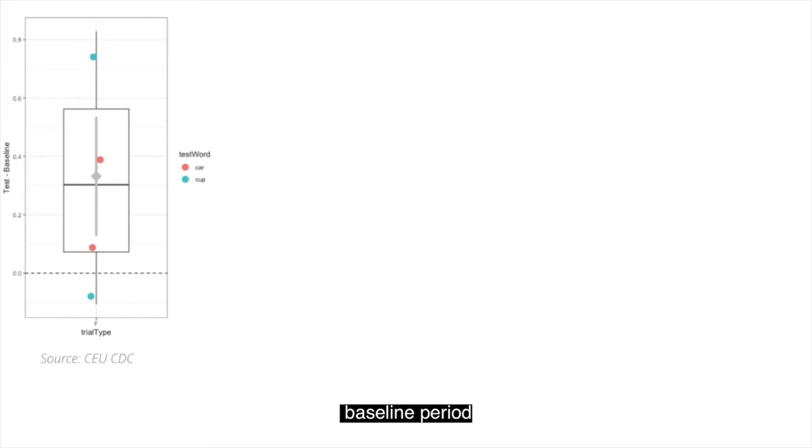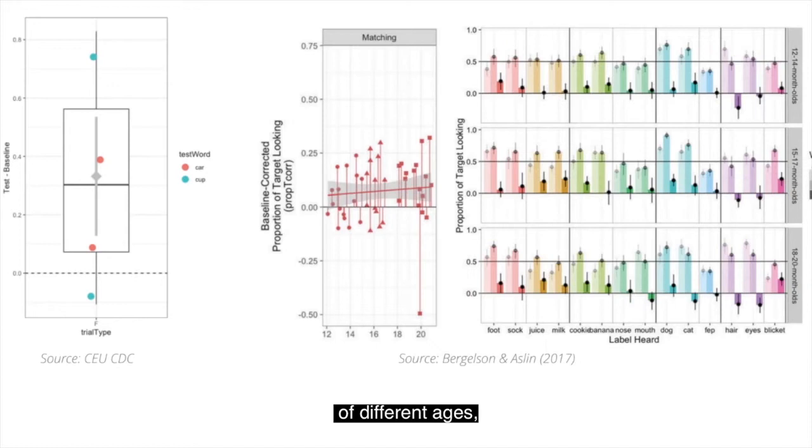When running a study we would collect this kind of data sets from more children, typically between 20 to 30. Sometimes we would compare children of different ages, like in this example where age ranges from 12 to 20 months. This would allow us to see how word recognition improves around and after the first birthday. These kinds of results that you see here provide evidence that before infants and toddlers start to speak, they have a small receptive vocabulary, or in other words, they understand a number of common words.